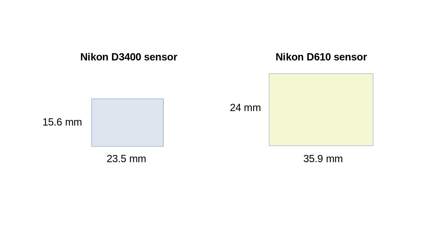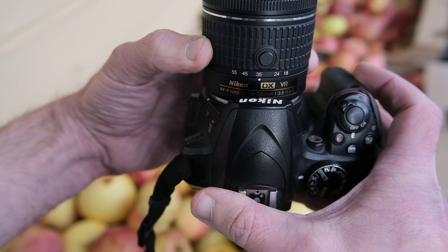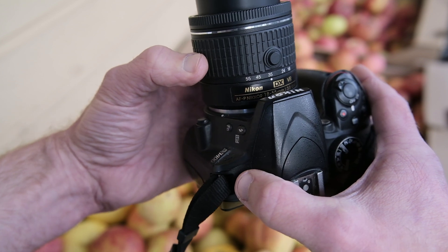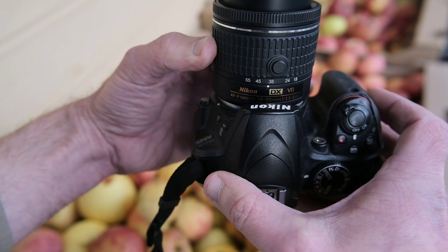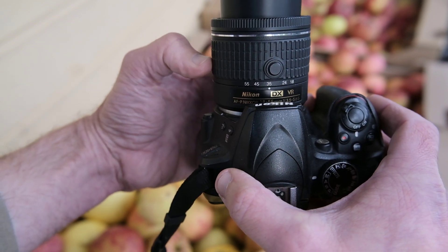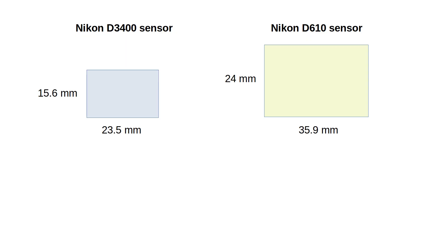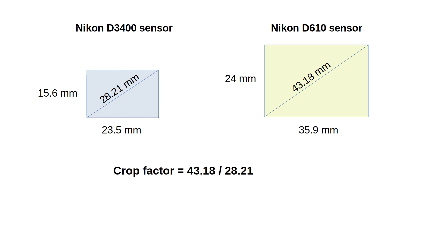This happens because crop sensors, like the one on the D3400, are smaller than full-frame sensors. The D3400 has a crop factor of 1.5, which means that the sensor crops the image compared to the full-frame camera. Crop factor is simply the ratio of the diagonals of the two sensors. These are the dimensions of the full-frame and crop sensor, and from this we can calculate the diagonals. Once we know the diagonals, we simply divide the two diagonals to get the crop factor. The crop factor affects both the focal length — how zoomed in the image appears — and the depth of field.